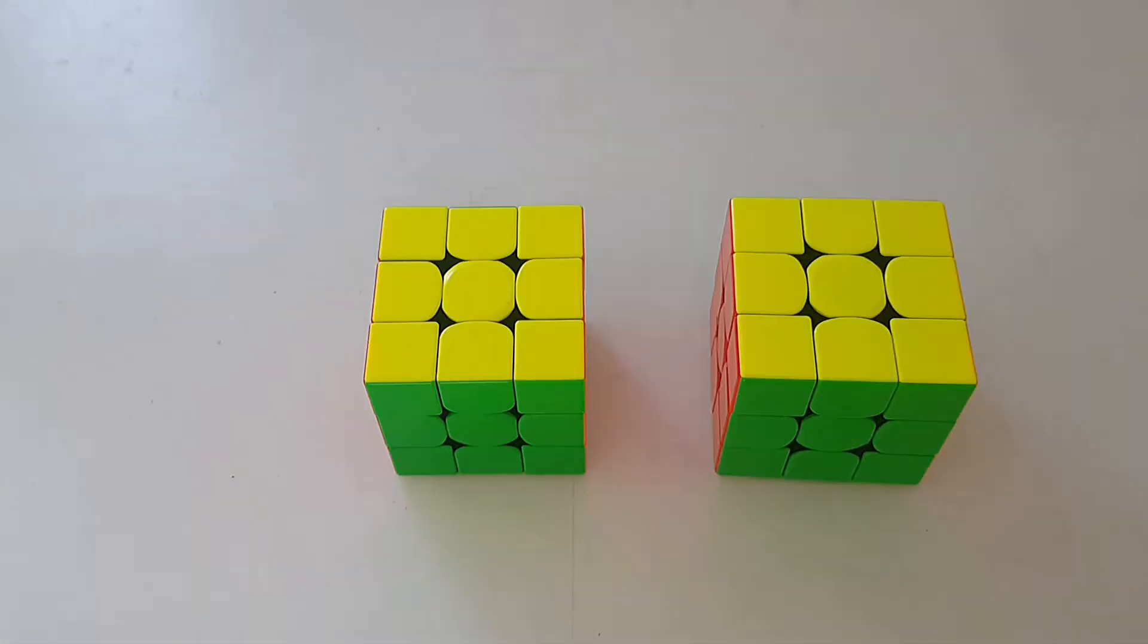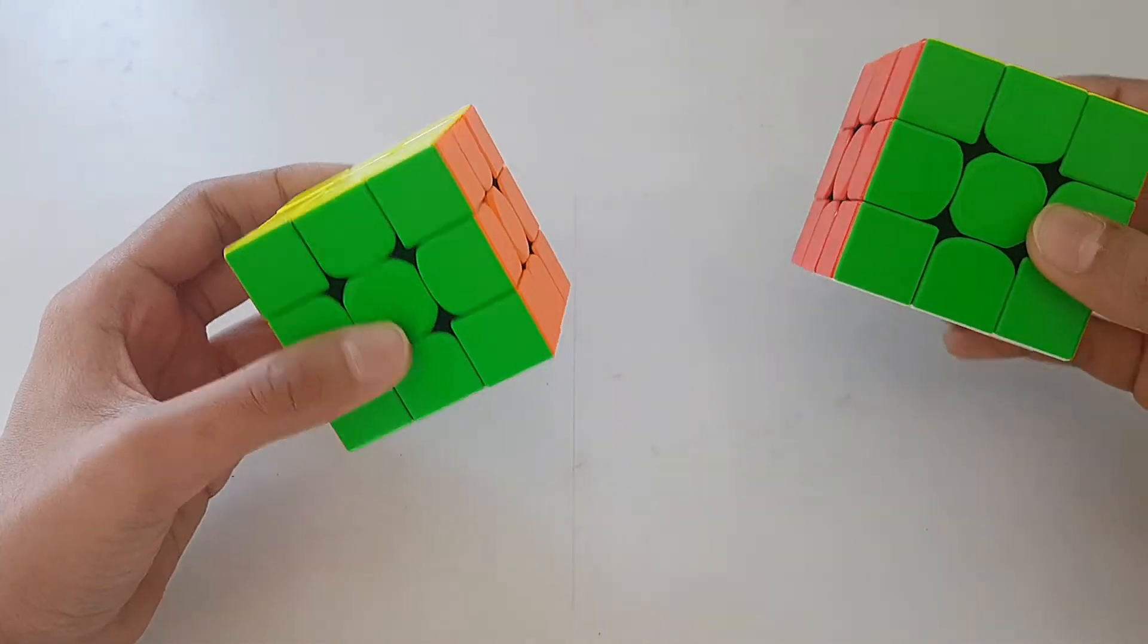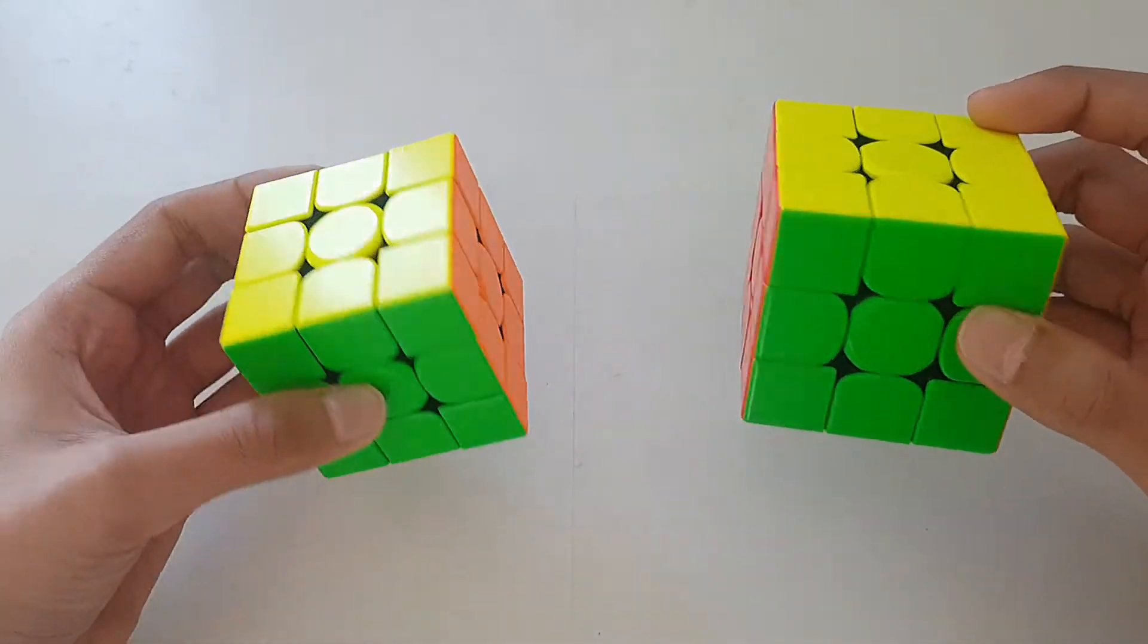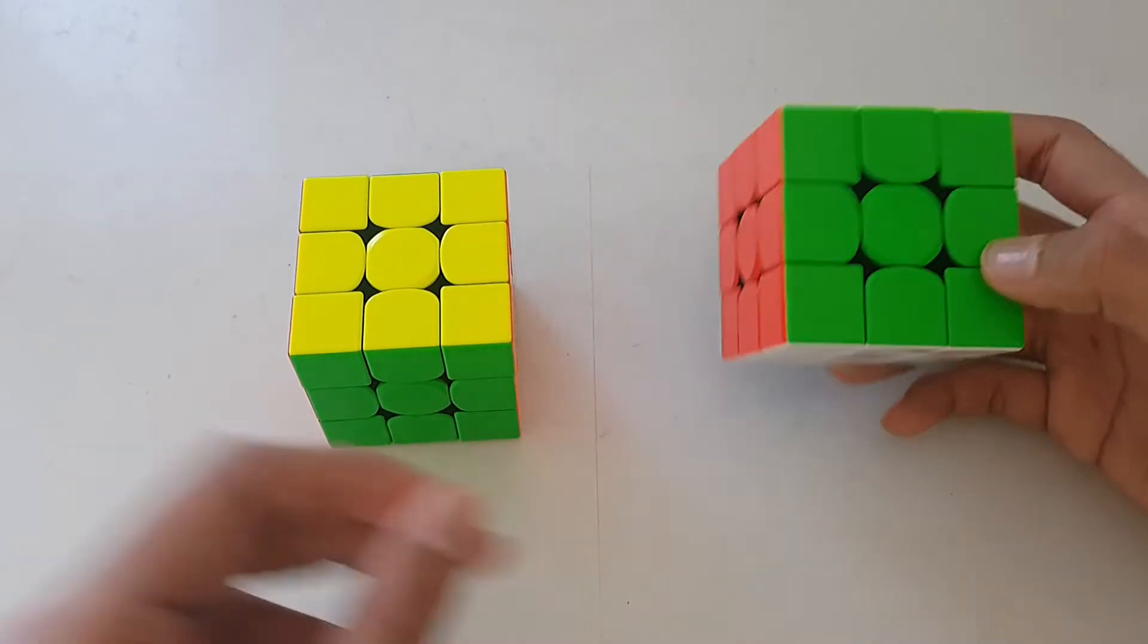Actually speaking, it's actually a trade between speed and stability. You can tell that the bigger cubes are more stable than the smaller cubes.